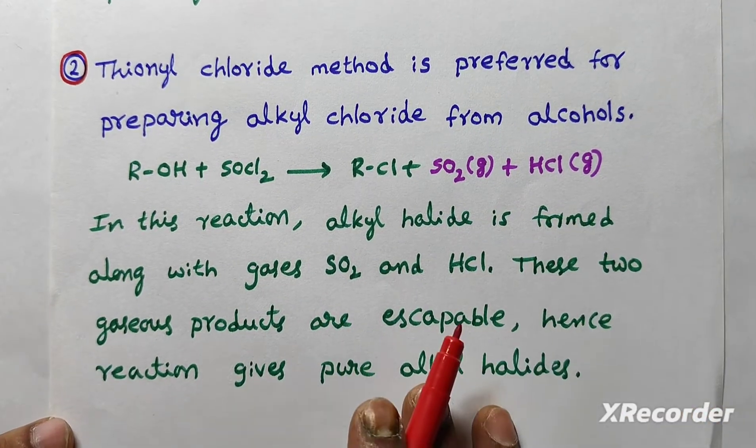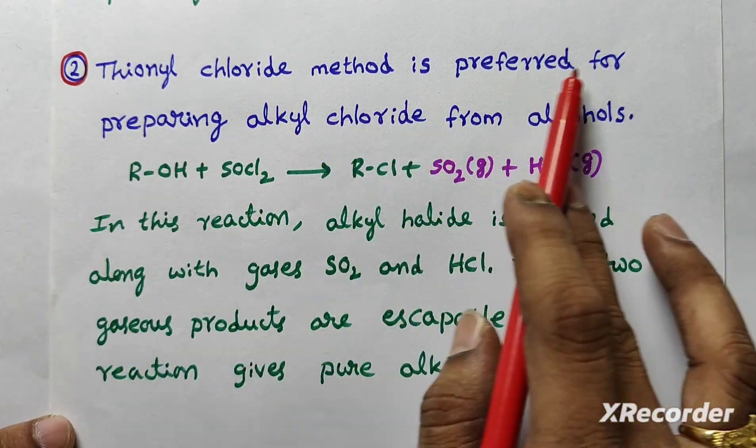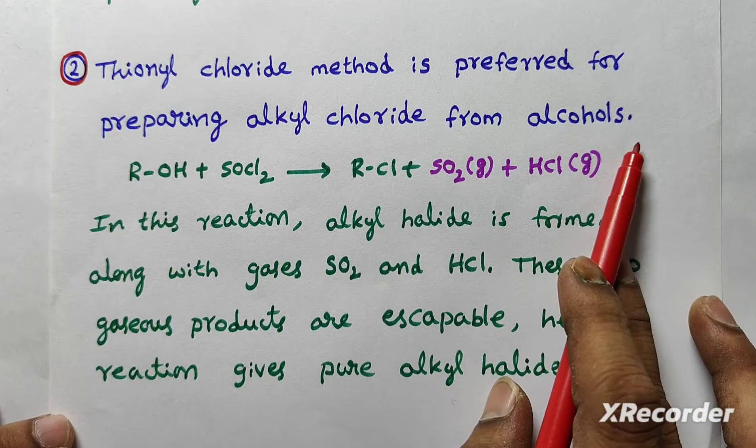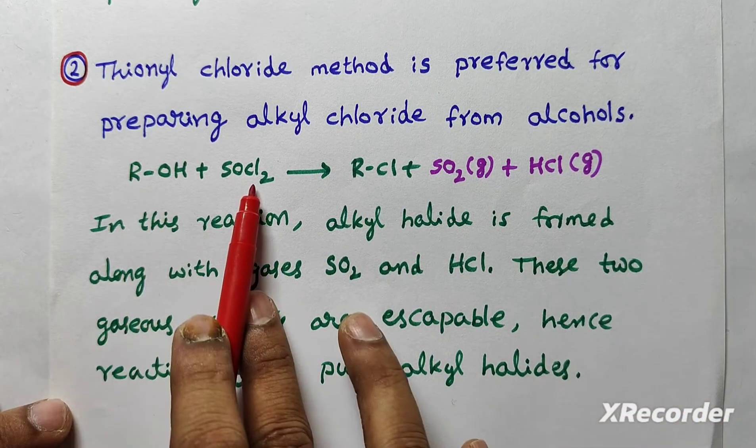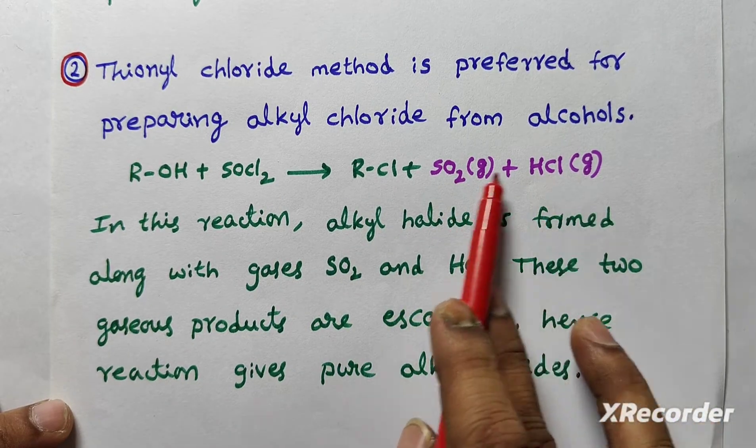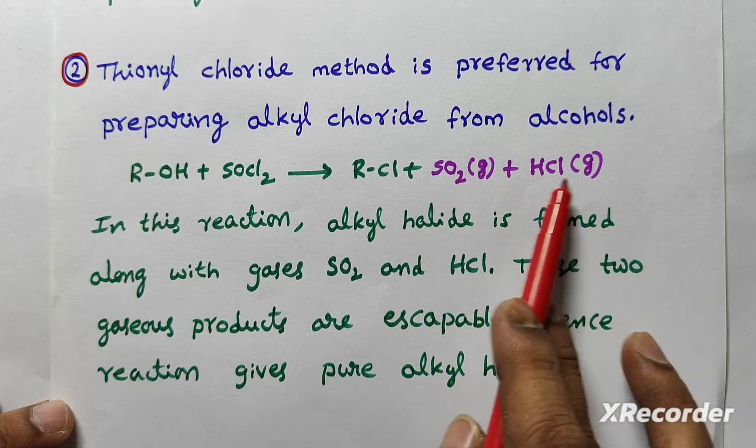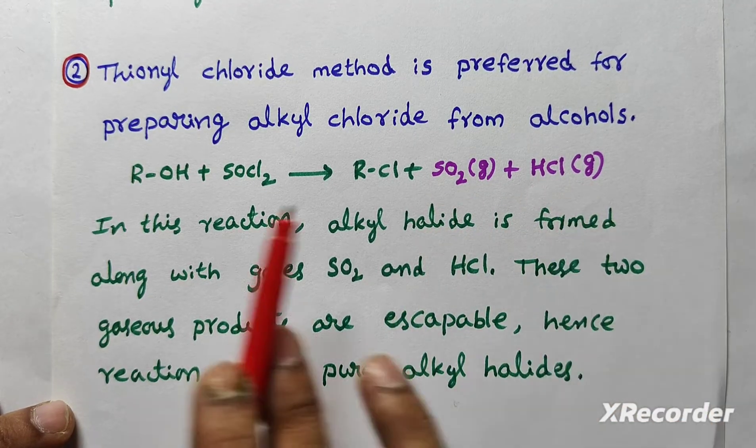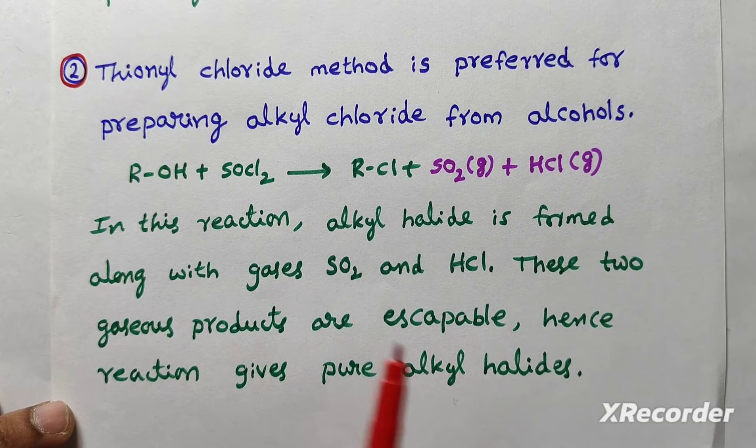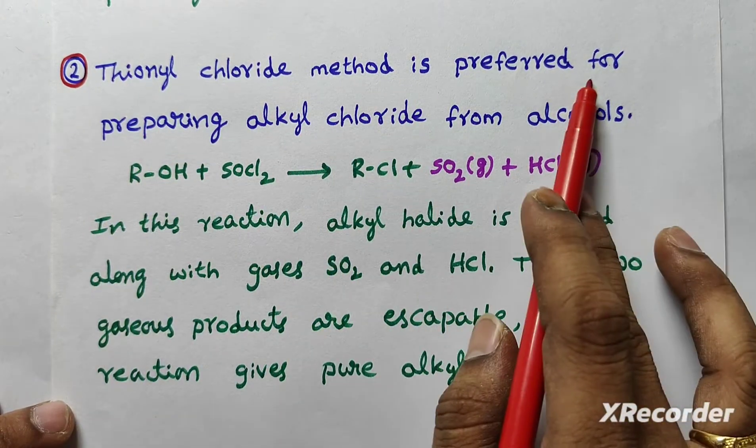Second question, thionyl chloride method is preferred for preparing alkyl chlorides from alcohols. Give reason. In this reaction, alkyl chloride is formed along with escapable gases. Byproducts are escapable gases. So in this reaction, we can get pure alkyl halides. That is the reason thionyl chloride method is preferred.